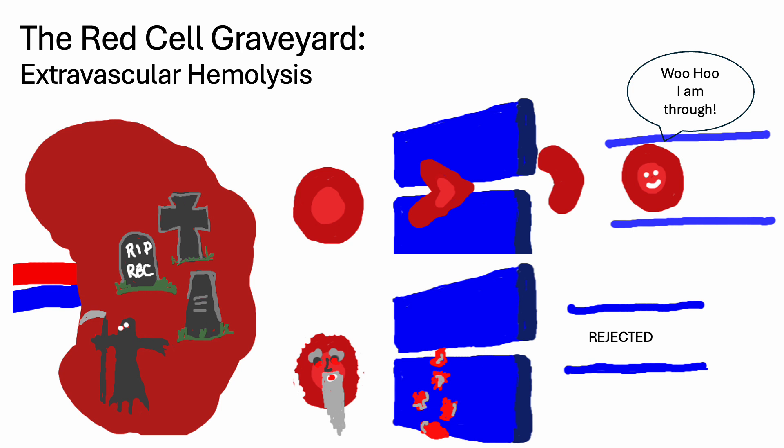The spleen is the red cell graveyard. This is where extravascular hemolysis occurs. The sinusoids in the red pulp have slits where the red cells need to fold and slip through in order to go back into the circulation. Young red cells are able to slip through easily because they are distensible.